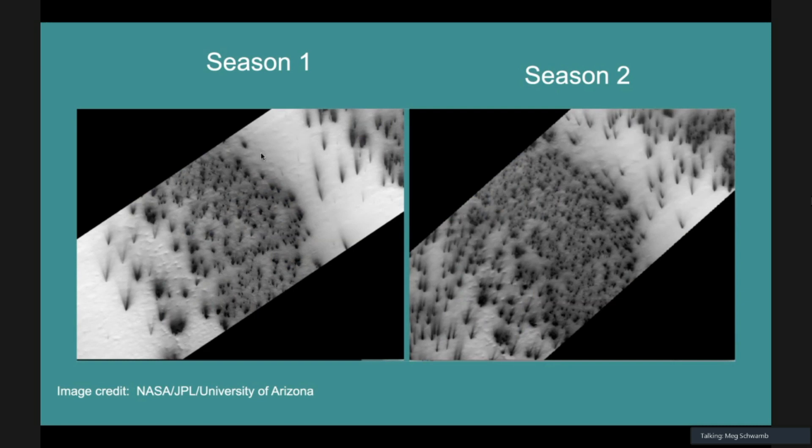On the left of season one, that's before the dust storm. On the right is season two, post-dust storm with the ice sheet that had the enhanced amount of dust within it. Clearly you can see by eye there's some differences. There are a lot more seasonal fans in season two, in that ice sheet that has a lot more dust in it.